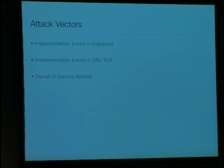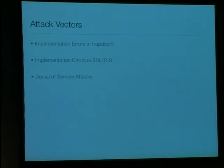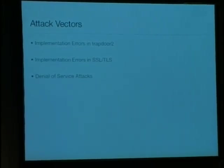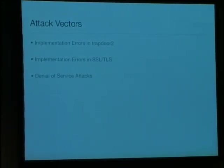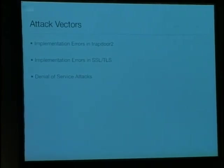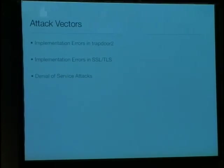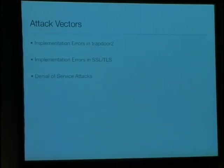The main attack vectors we identified were: first, implementation errors in Trapdoor 2 itself — for example buffer overflows, integer overflows, and all that kind of usual stuff you have to care about when using a low-level language like C. Then, another main attack vector is the SSL implementation — like OpenSSL or GnuTLS. And there are also denial of service attacks, which can become a huge problem since we fork twice and new processes take quite a few resources: memory, CPU time. So you need to prevent resource exhaustion.